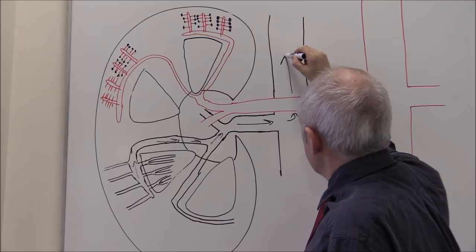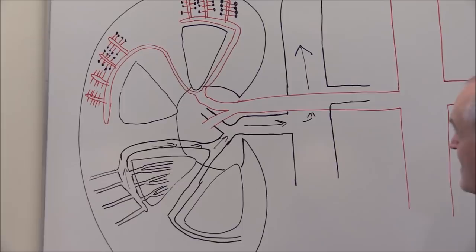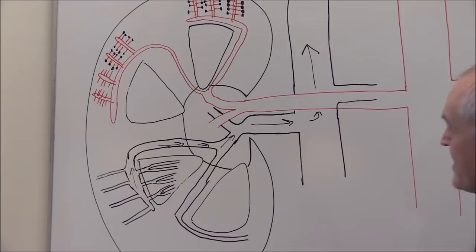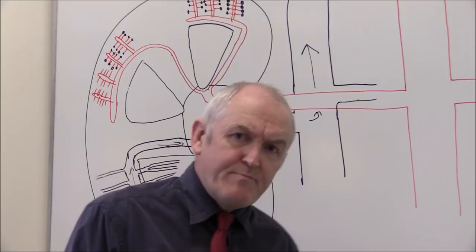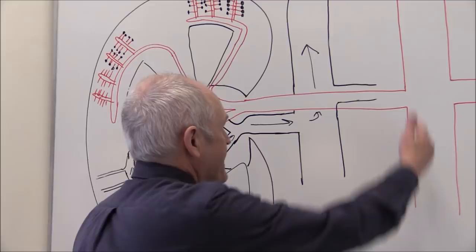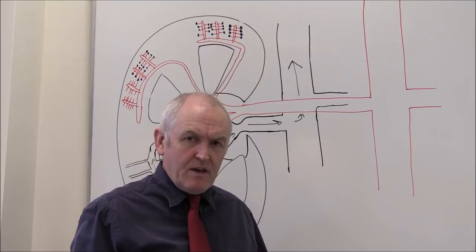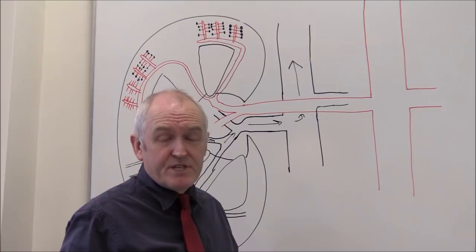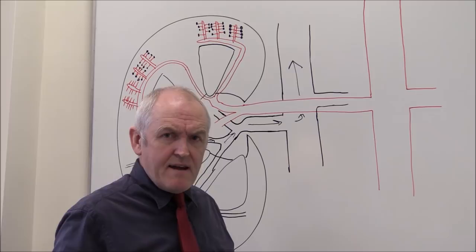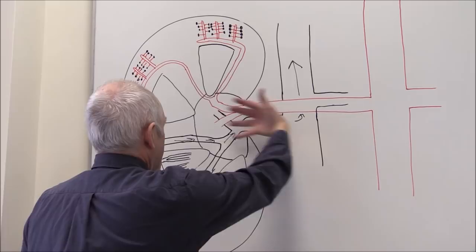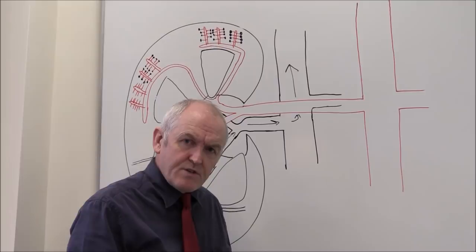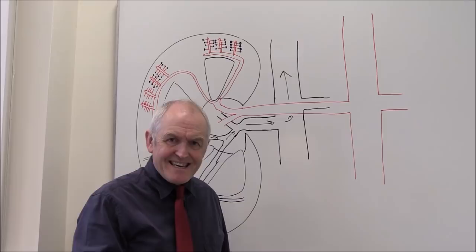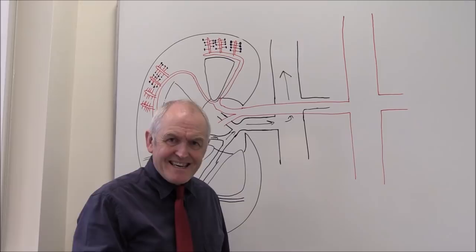From the renal vein, blood starts its journey back to the right atrium via the inferior vena cava. It's interesting to note that even though the kidneys are only 0.5% of body mass, 20 to 25% of cardiac output is going to the kidneys — they are remarkably vascular organs. This is very important if they are traumatized, because there can be torrential hemorrhage as a result of renal trauma. In health, lots of arterial blood needs to go through the kidneys because they are filtering this blood, removing impurities, homeostatically regulating the constituents of the blood, and returning it to the venous system.